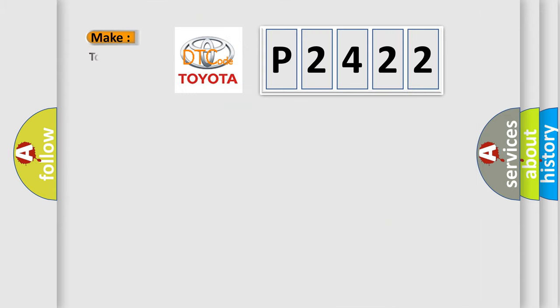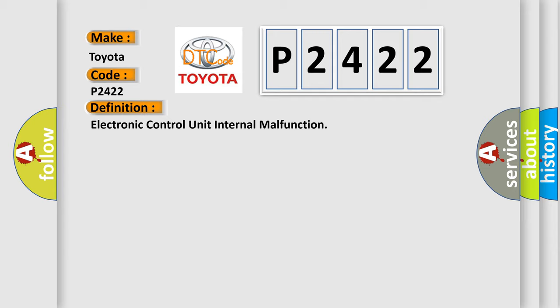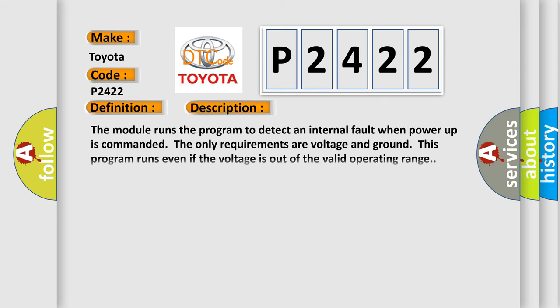So, what does the diagnostic trouble code P2422 interpret specifically for Toyota car manufacturers? The basic definition is electronic control unit internal malfunction. And now this is a short description of this DTC code. The module runs the program to detect an internal fault when power-up is commanded. The only requirements are voltage and ground. This program runs even if the voltage is out of the valid operating range.